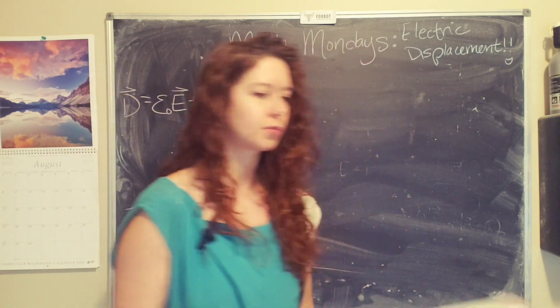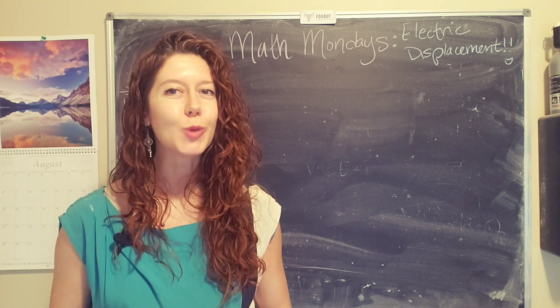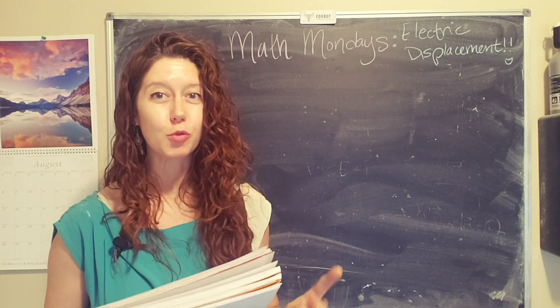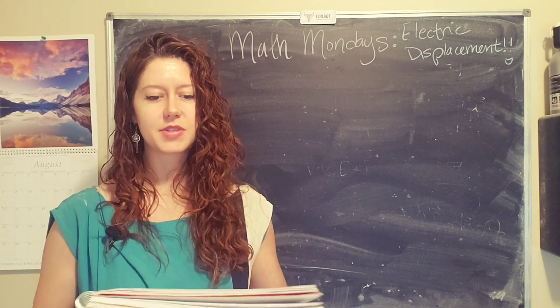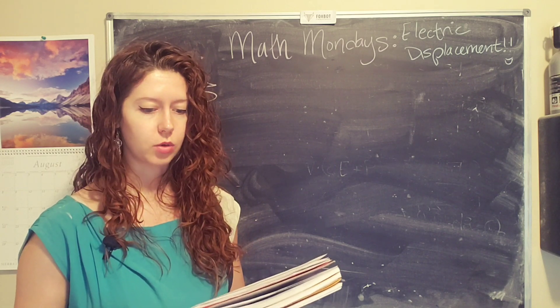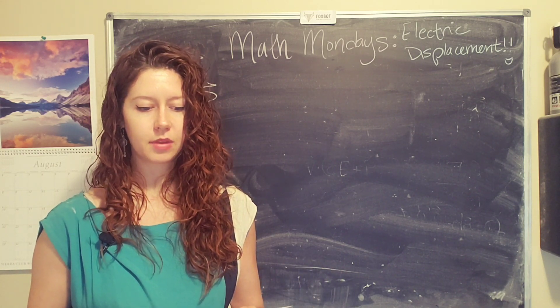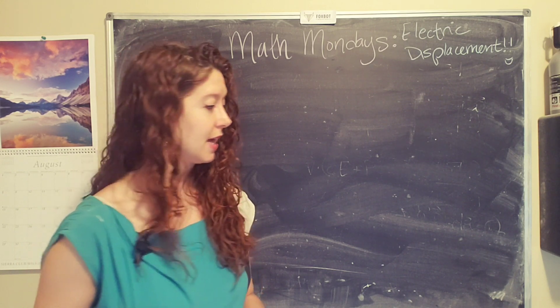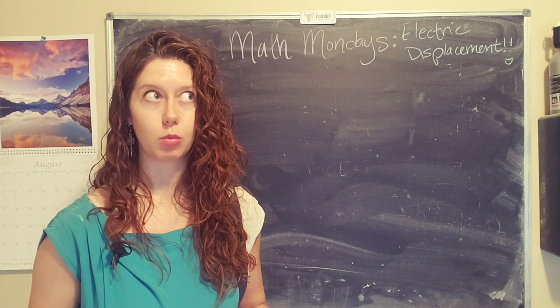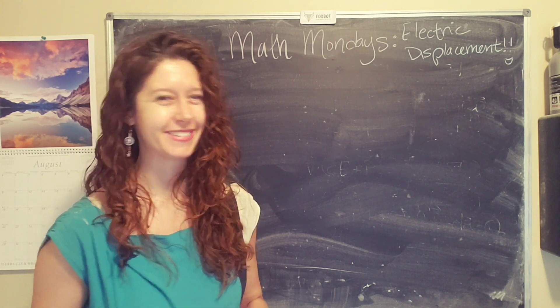Okay, so here is our problem statement. A long, straight wire with a uniform line charge density, lambda, is surrounded by rubber insulation. The rubber insulation has a radius, A. Find the electric displacement. And again, classic physics problem, you're like, where are the numbers? Ha ha ha. Fun. We don't need numbers. It's fine. They'll pop up later.